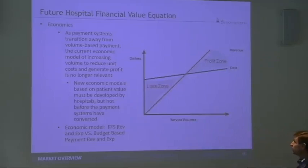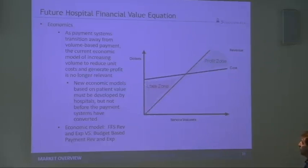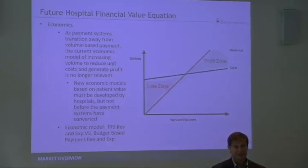In a fee-for-service world, these are our expenses at zero volume — we have to have standby capacity, staff our beds, staff our emergency room. But every incremental unit of service we generate, our expenses go up a tiny bit. We admit a patient to our hospital tonight — how much did our cost go up? Did we have to change our staffing model? We had to feed the patient, maybe some drugs. So our expenses go up a little bit.